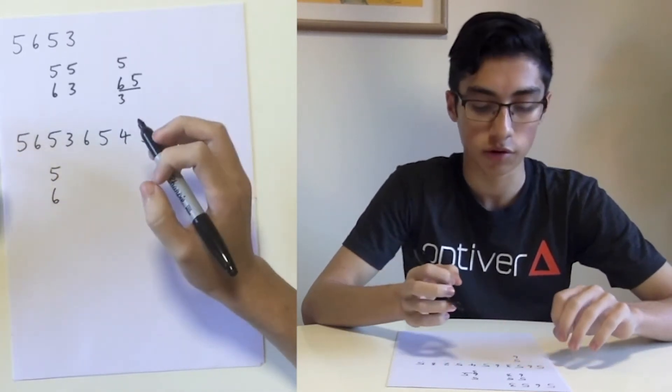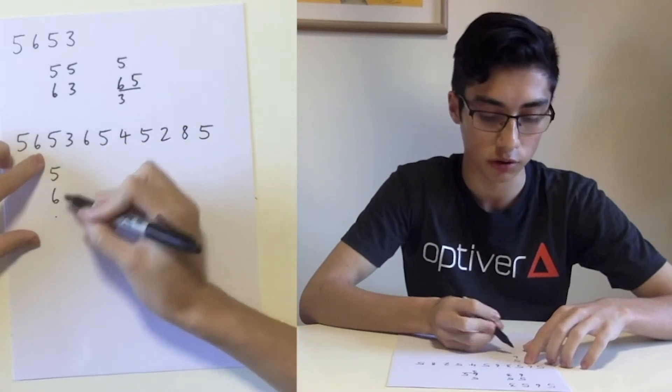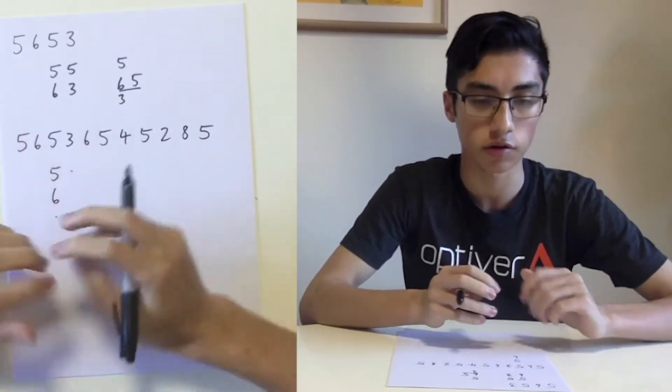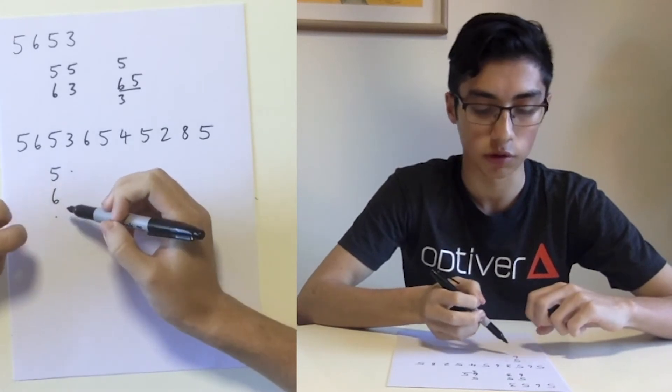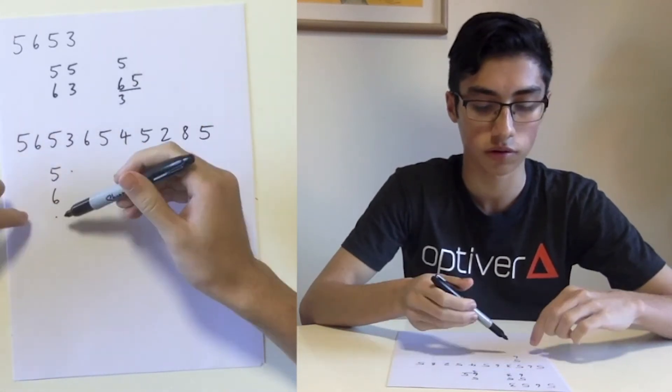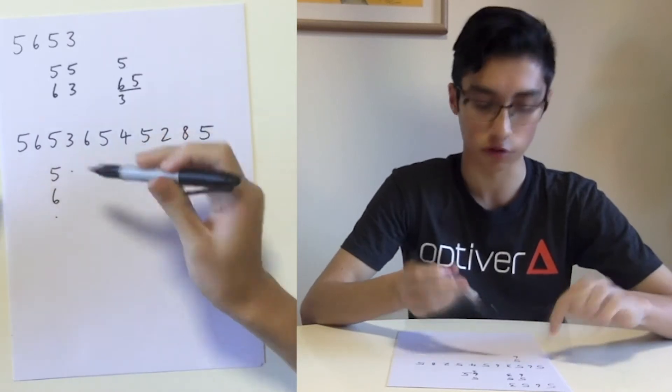However, sometimes there is more than one possible move, so this next 5, we can either start a new list or get added to the existing 5. In this case, we only ended up with 2 lists, and by starting a new list, we would end up with 3.